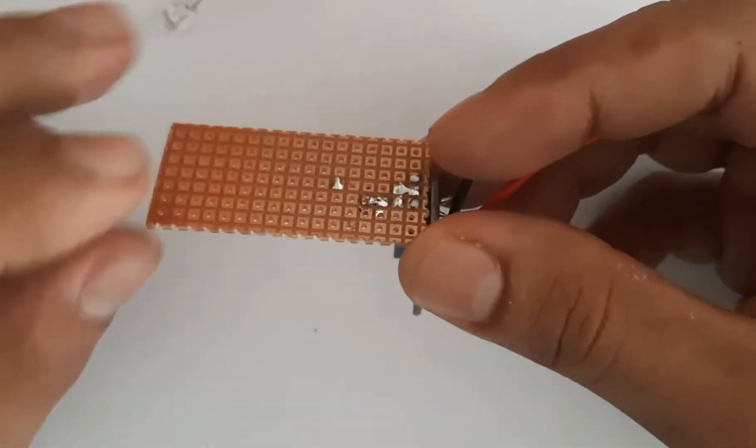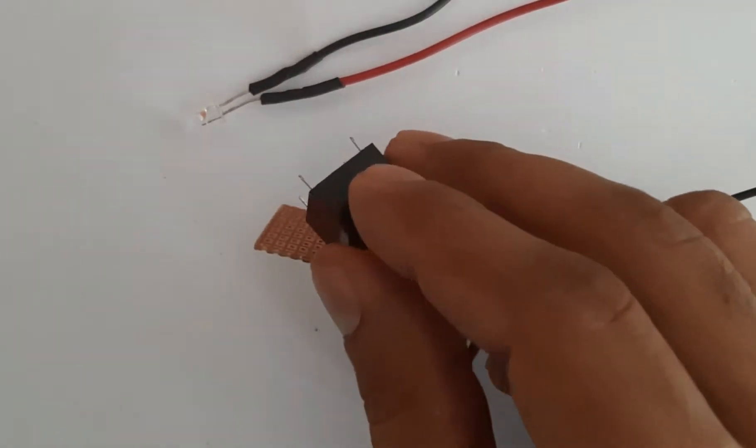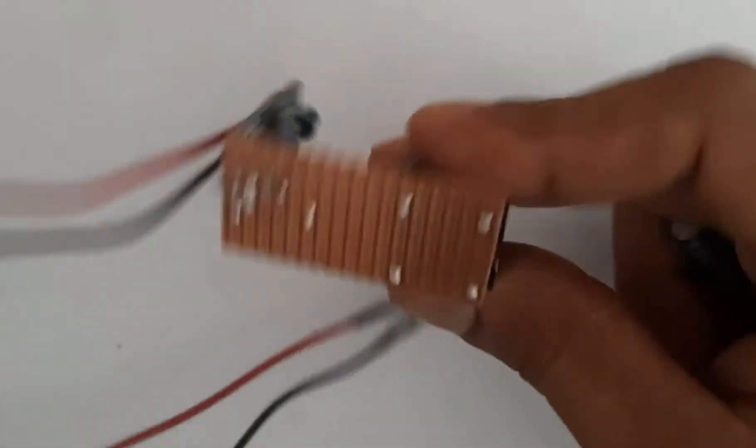Then we'll connect the resistor to the base of the transistor from the output of the proximity sensor. Then we're going to connect the relay module there.